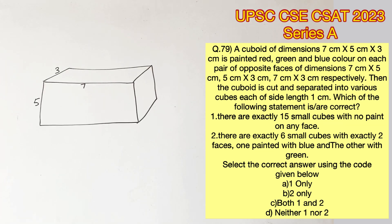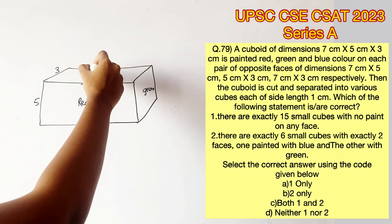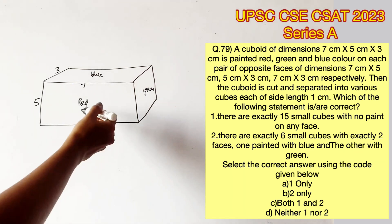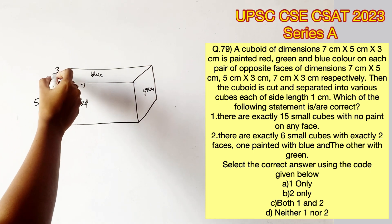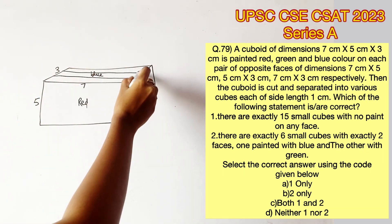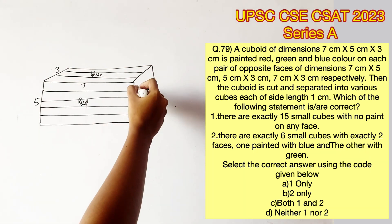A cuboid is of dimensions 7 by 5 by 3 centimeters. The 7 by 5 faces are painted red, the 5 by 3 faces are painted green, and the 7 by 3 faces are painted blue. This means opposite faces have the same color. The cuboid is then cut into equal cubes of side one centimeter.